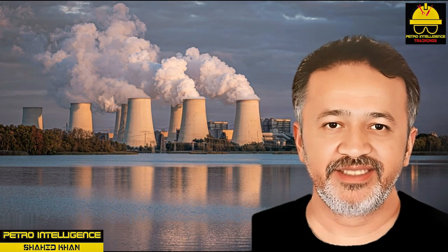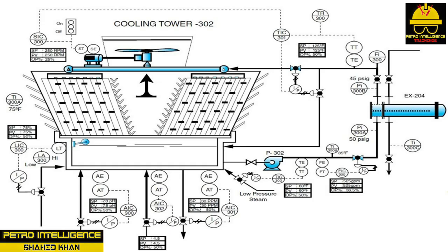Blowdown control AIC-301, an analytical indicating controller: the purpose of this controller is to monitor and control the levels of suspended solids. Using either draw-off or blowdown, this process is primarily used to control the build-up or concentration of minerals in the recirculation water. The blowdown system is designed to control the level of suspended solids in the water basin; high levels of suspended solids will cause fouling. Blowdown is closely related to the term concentration cycles.